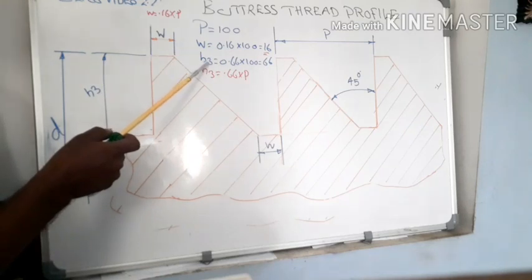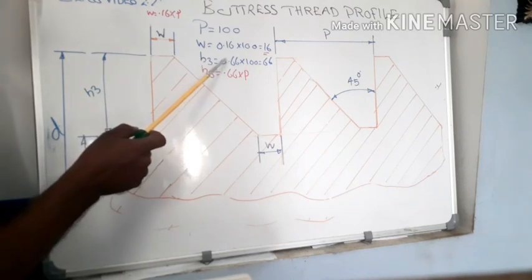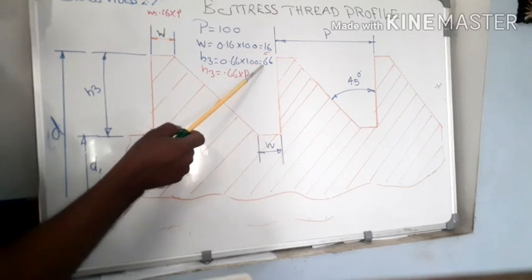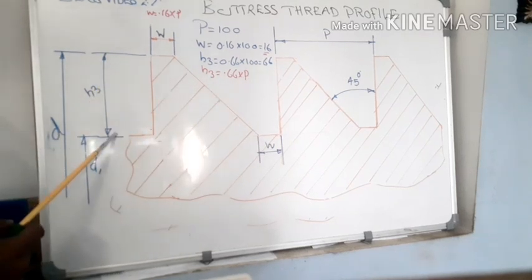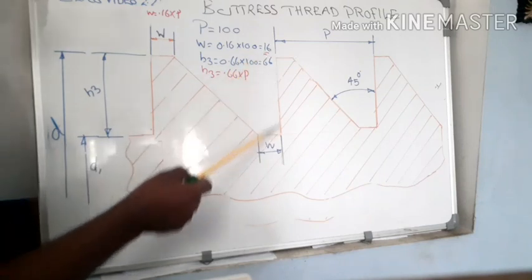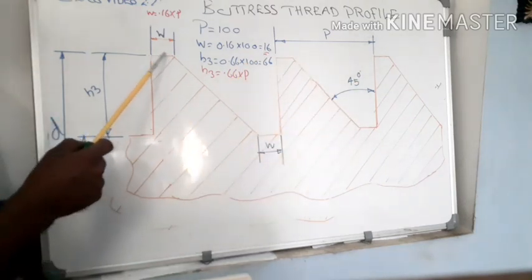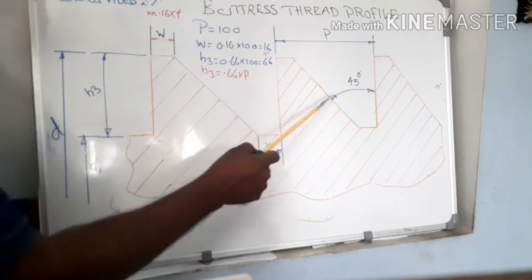Now the next data is H3 - depth of thread. We can find out that value by using this formula: 0.66 into pitch. That is 66 mm. Now this distance is 66 mm. First you have to draw the pitch lines and mark this width distance at the top and the bottom.